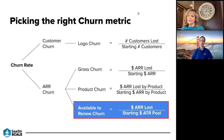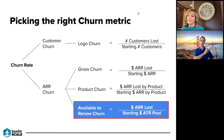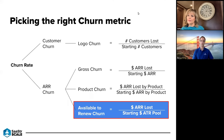We would prioritize focusing on ARR churn. You can look at it in lots of different ways. There's gross churn rate — how much ARR have we lost compared to our beginning ARR, including both what was available to renew and multi-year contracts. Typically anything under about 10% gross churn rate is pretty good; anything under about 5% is fantastic.